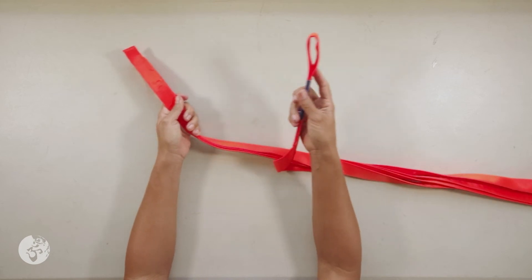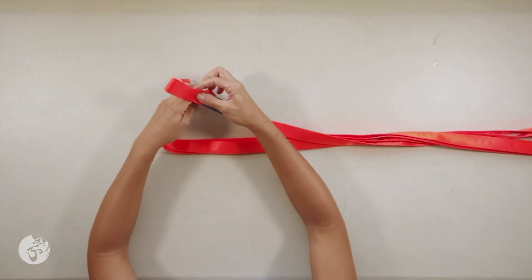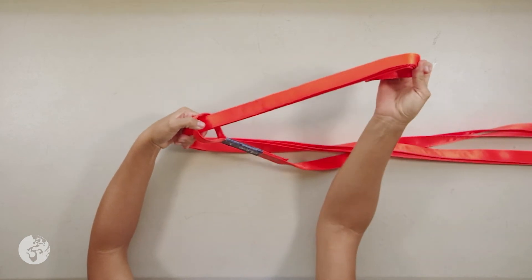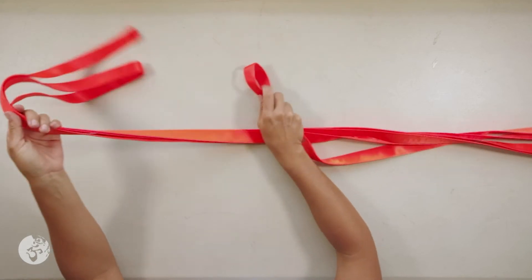So now all I have to do is separate this, go around my tree and this loop is big enough that I can pass all the pieces of webbing through. And it's really easy to set up and take down.